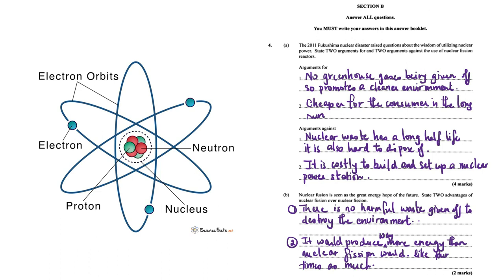Nuclear fusion is seen as the great energy hope of the future. State two advantages of nuclear fusion over nuclear fission. First, there is no harmful waste given off to destroy the environment. With nuclear fission, even though it doesn't produce greenhouse gases, it does give off daughter products like barium and heavy metals, which are very hard to dispose of.